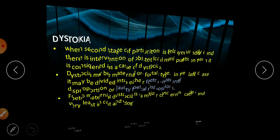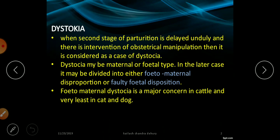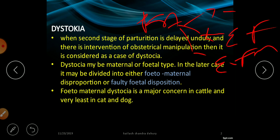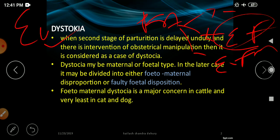The term 'abnormal' signifies that it is a case of complicated parturition, more profoundly known as dystocia. This presentation may be helpful to academicians, researchers, students, farmers, and field functionaries. When the second stage of parturition is delayed and there is intervention of obstetrical manipulation, it is considered dystocia. The whole parturition process is divided into three stages: first stage involves expansion of allantoic fluids and lubrication of the birth passage; second stage involves expulsion of the fetus; and third stage involves expulsion of fetal membranes. When the second stage is unduly prolonged and we go for obstetrical manipulation, it is known as dystocia. When parturition is normal and easy, it is known as eutocia.